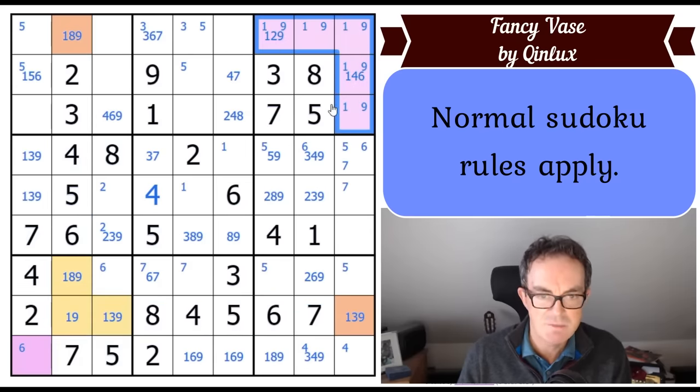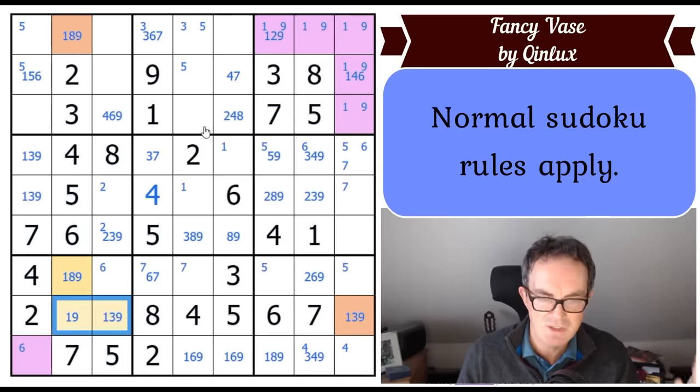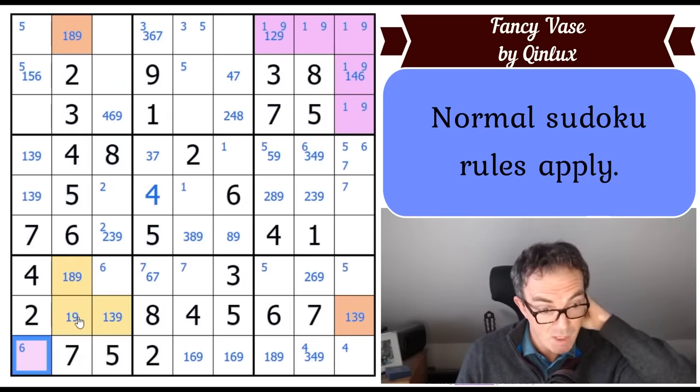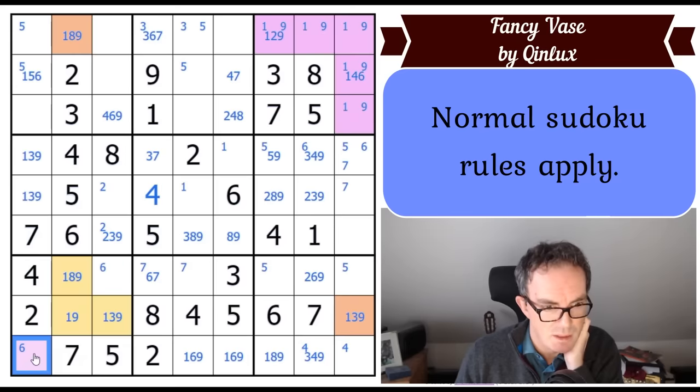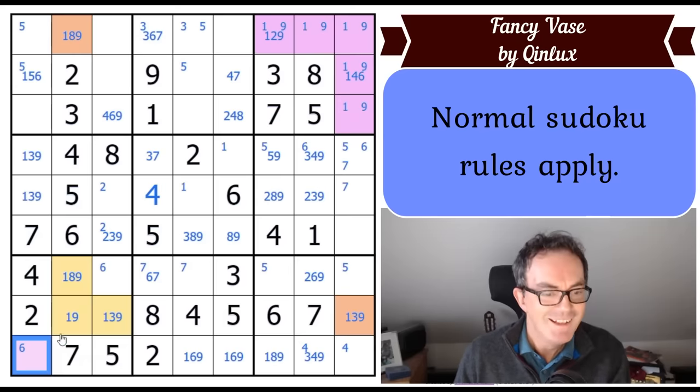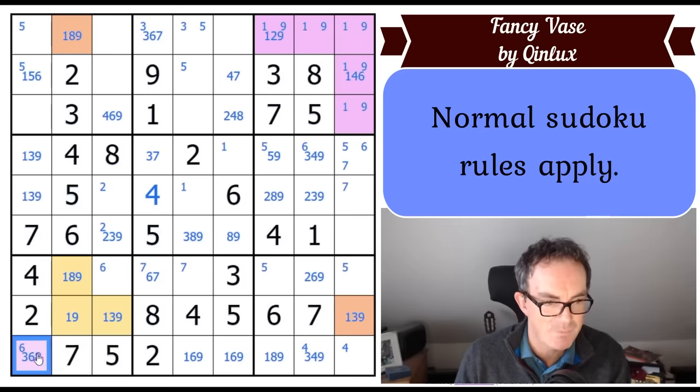So if the one was horizontal in box three, this square could not be a one and then the one would be locked into this domino. But if the one was vertical, the one couldn't be here and the one would still be there. So these three squares in box seven have to contain the digits one and nine because of the effect of this empty rectangle on this column and this row. So there is no one or nine in that square.